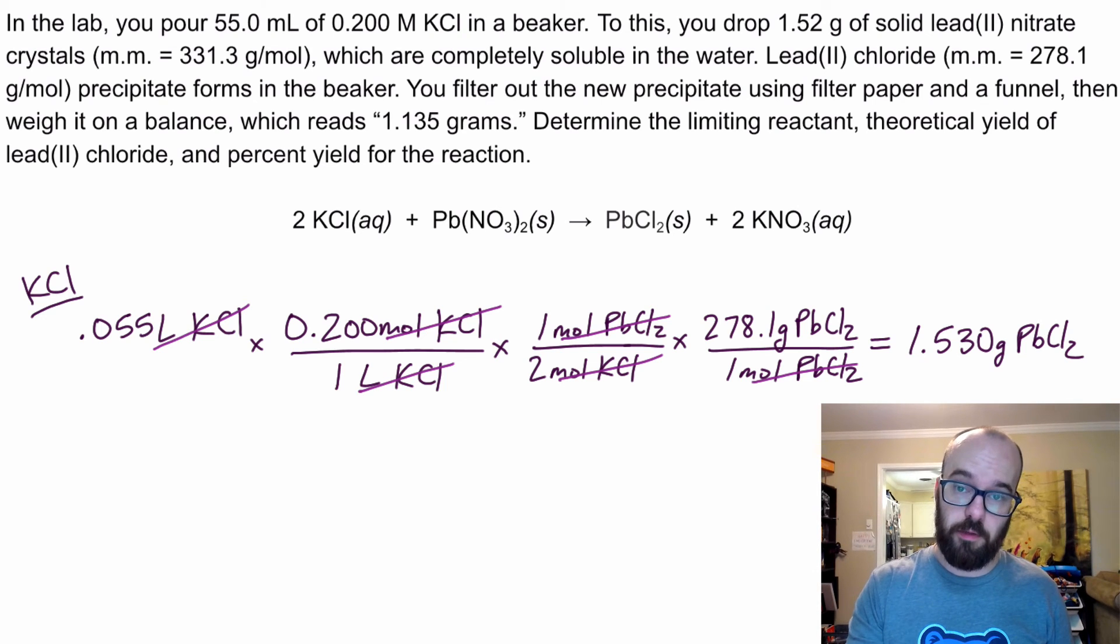Now that could be our answer for theoretical yield. We don't know yet, though, because we don't know whenever we do the same process for lead nitrate. Lead nitrate may only produce one gram of lead chloride. In that case, that would be our limiting reactant. We've got to do both, even though this could be our answer. We don't know yet until we do both calculations.